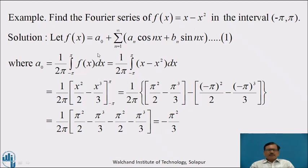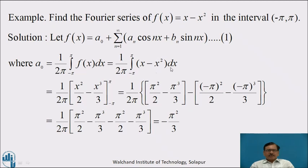Let f(x) equal to a naught plus summation of n equal to 1 to infinity of aₙ cos(nx) plus bₙ sin(nx) — let us call this equation number 1 — where a naught equals 1 by 2π integration from minus pi to pi of f dx, which equals 1 by 2π with f being x minus x square dx.